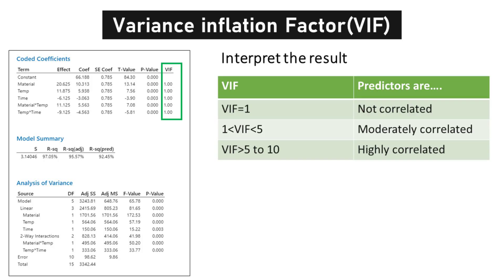A VIF of 1 is a positive indication for regression analysis, as it suggests that the independent variables are not correlated with each other. A VIF value greater than 5 or 10 indicates a high level of multicollinearity, suggesting that the independent variables are highly correlated with each other.